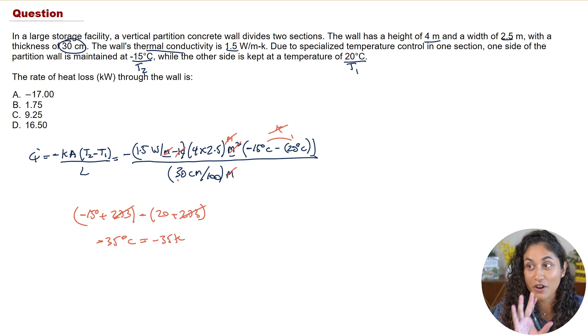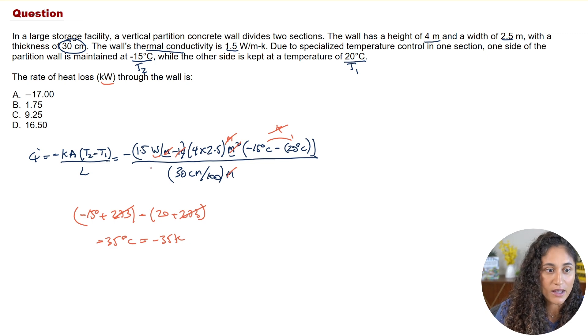Now we're going to be left with watts but we want kilowatts. To go from watts to kilowatts we can divide by a thousand so we can take this whole term and just divide it by a thousand and if you do that you're going to get 1.75 kilowatts so now if we take a look at the multiple choice the answer is going to be B.